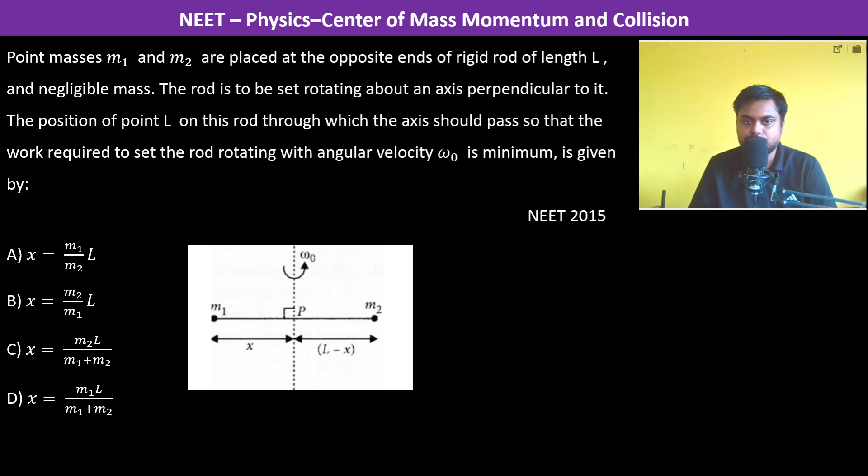The rod is set to be rotating about an axis perpendicular to it. So this is the axis and this is perpendicular. The position of point L on this rod through which the axis should pass so that the work required to set the rod rotating with angular velocity ω₀ is minimum.